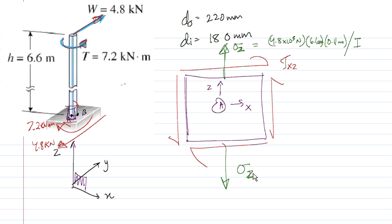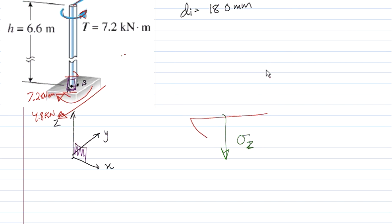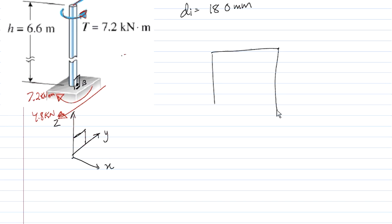That's sigma z and that's what my stress element should look like for point A. Let's look at point B. Point B is on the side and corresponds to the neutral axis where this guy is bending. If we look at point B, let's draw our plane. This plane corresponds to the yz plane. I'm going to draw my stress element B and this guy is going to correspond to my yz plane.